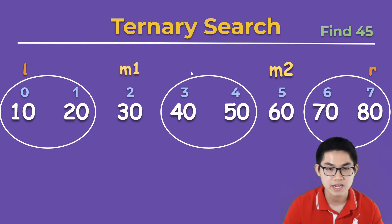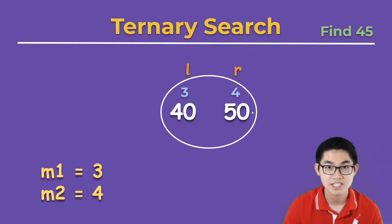We move l to the second group, and r to the second group. And then we repeat this process. So we calculate m1 and m2, which are at 3 and 4. We look at m1 and m2 again. That's not 45. This is also not 45. But 45 is between 40 and 50.